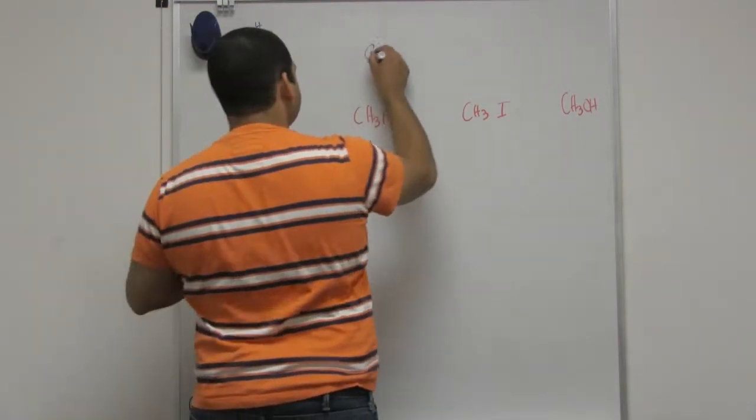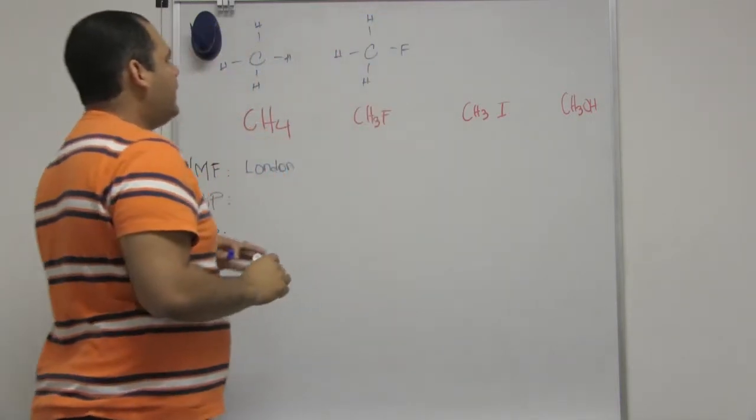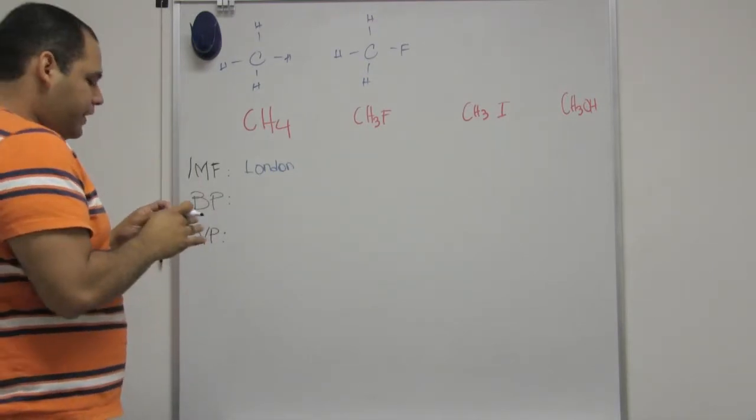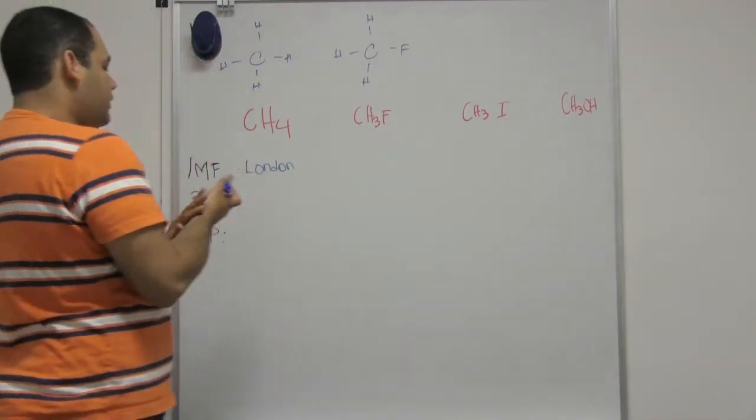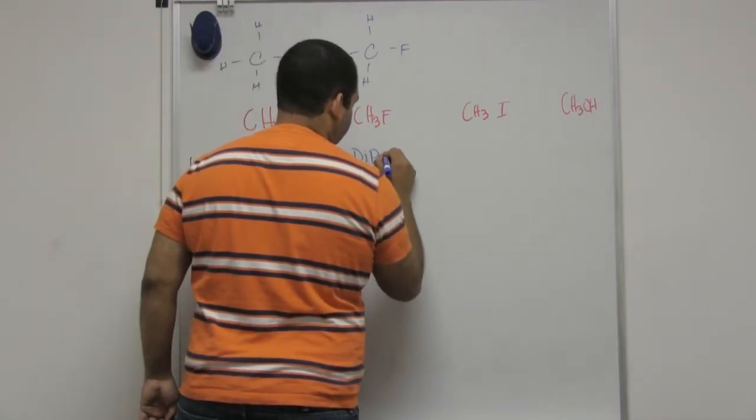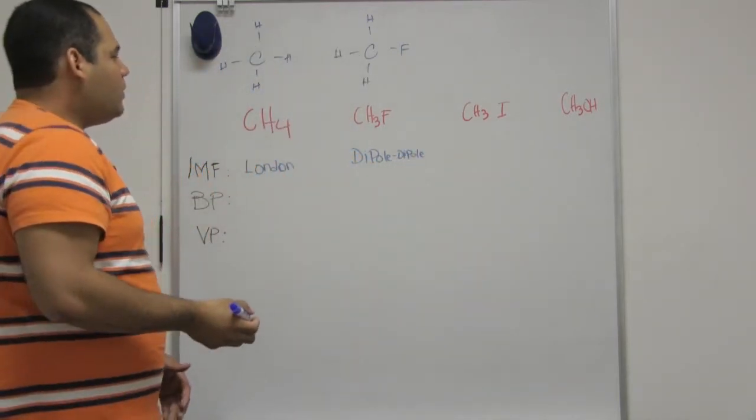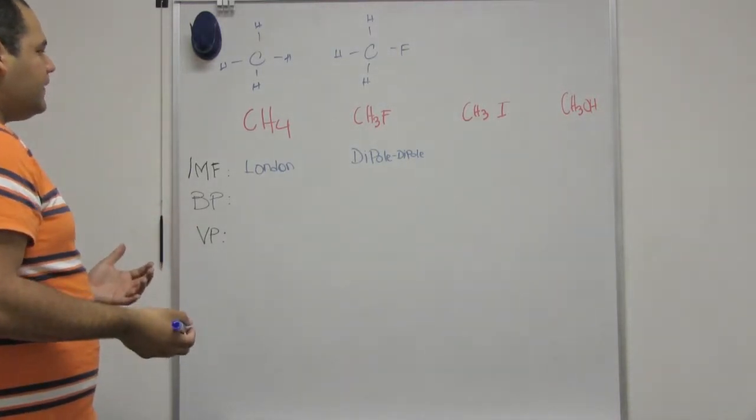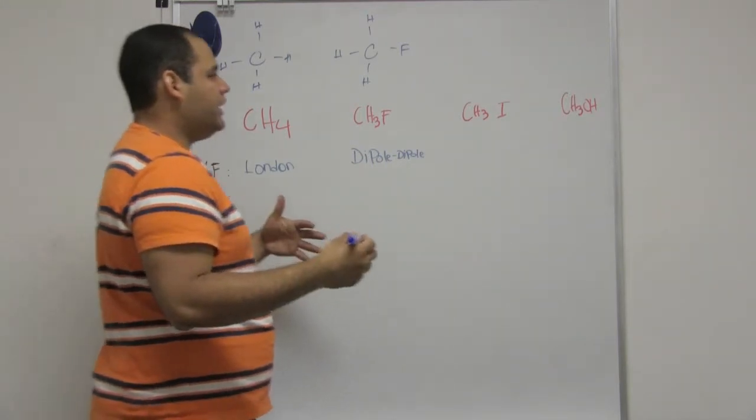This guy here, if I draw the liquid structure, and I ask myself about symmetry, I know that it's not symmetric. I know that this molecule has polar bonds. Therefore, this is a polar molecule, and it is a dipole-dipole interaction. We know that London forces is the weakest intermolecular forces. Dipole-dipole is stronger than London, but it's weaker than the hydrogen bond.